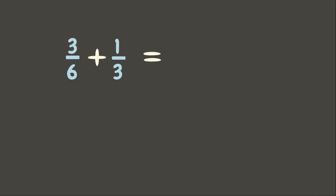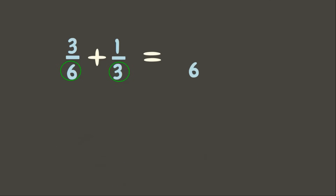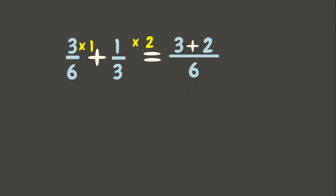Let's have another one. Get the LCD of six and three — their LCD is six. Now get the equivalent fractions: six divided by six is one, multiplied to three is three. Six divided by three is two, multiplied to one is two. Three plus two is five out of six — our final answer is five-sixths.